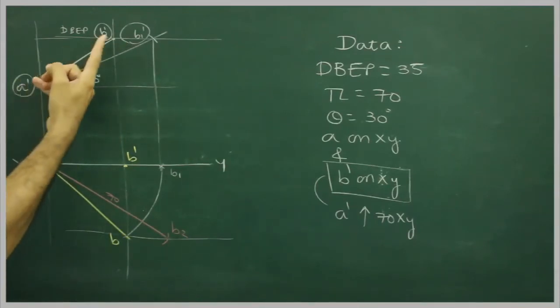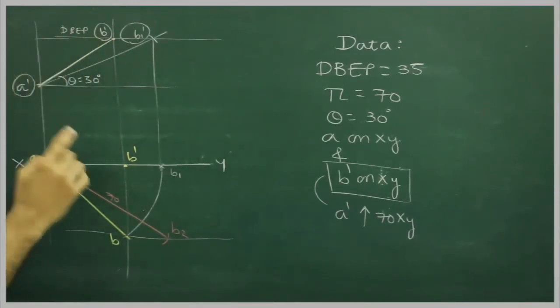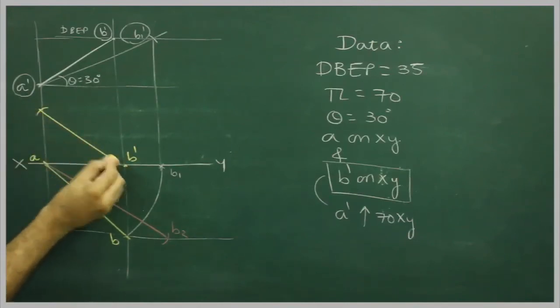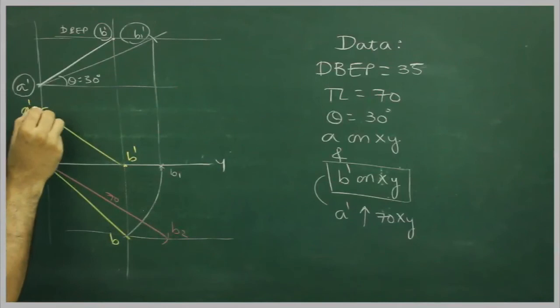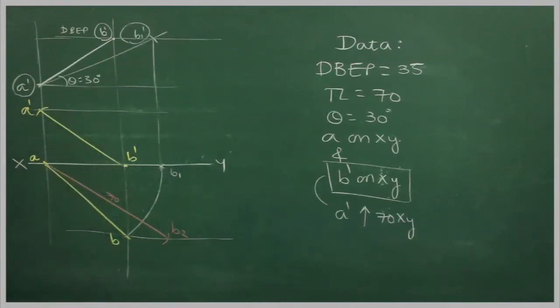So take B' to A', take this much in your compass, from B' you can cut down this side. So we will get B. And we can mark true length.